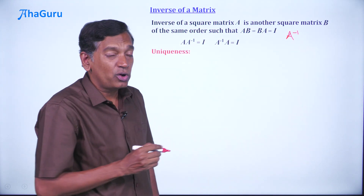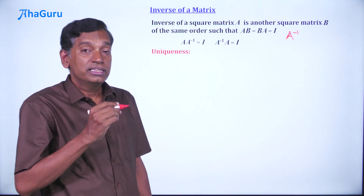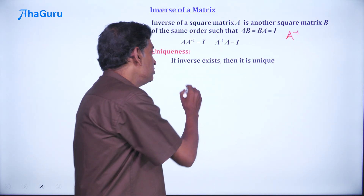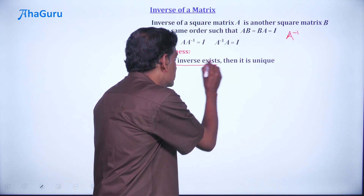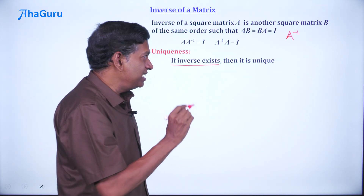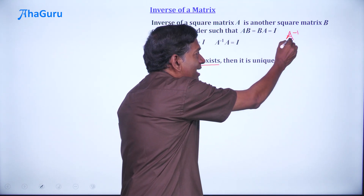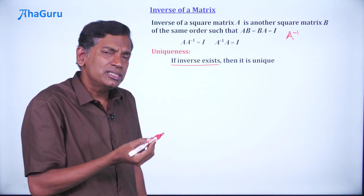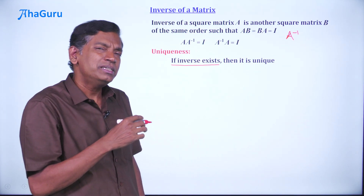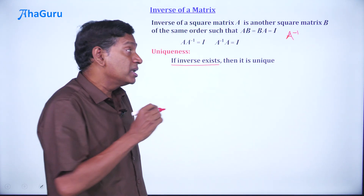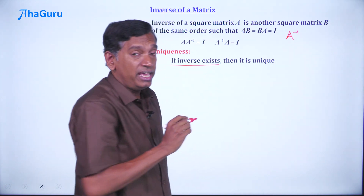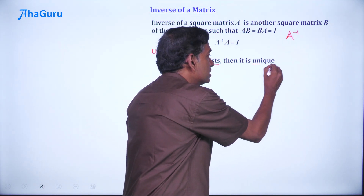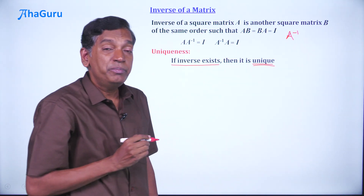The first idea is what we call uniqueness. That means if inverse exists — now what does it mean to say if inverse exists? Well, we are going to see later that you cannot always find A inverse for all matrices A. Some matrices you may not be able to find A inverse, but if you are able to find an A inverse, then it is unique.